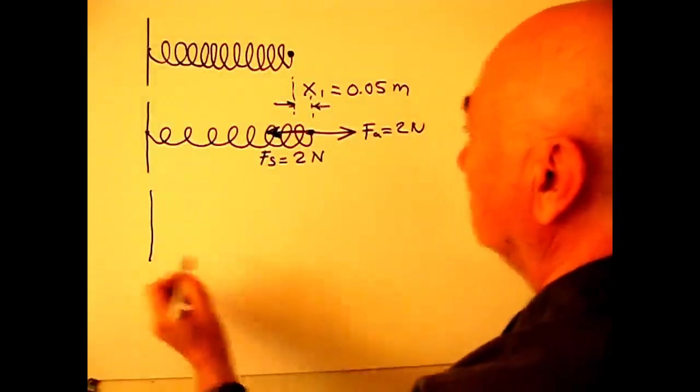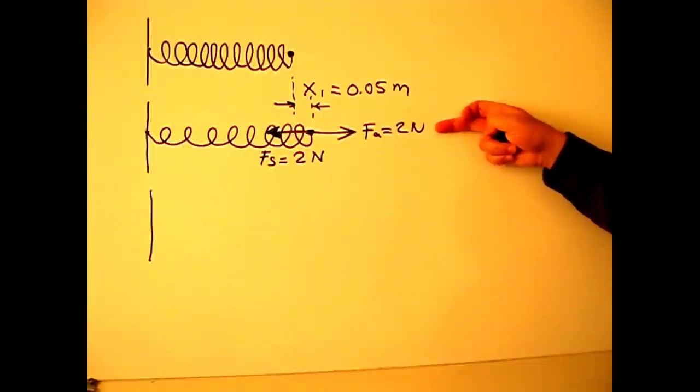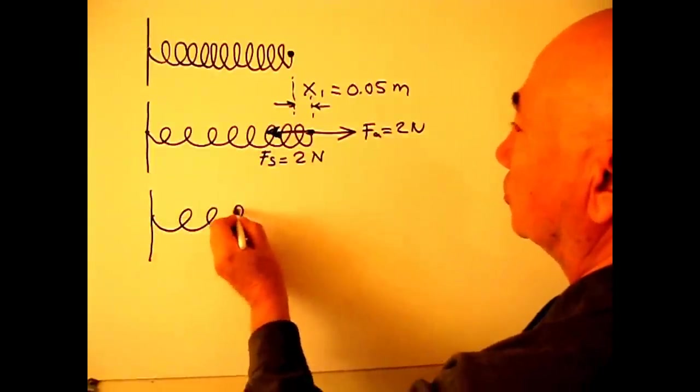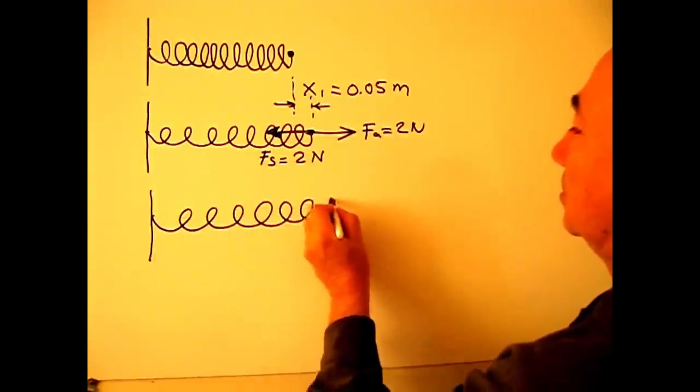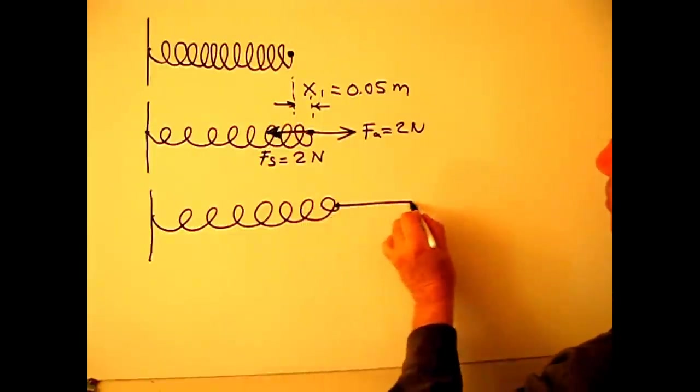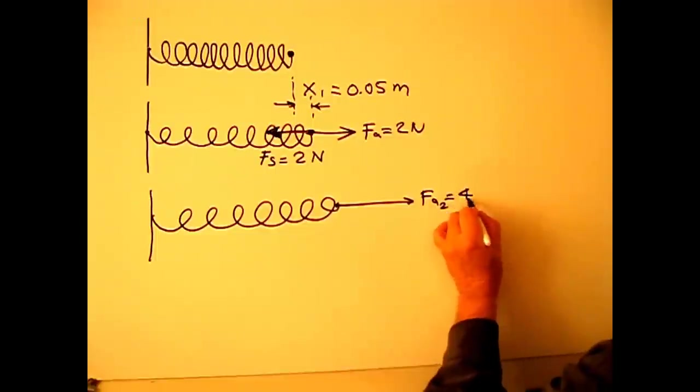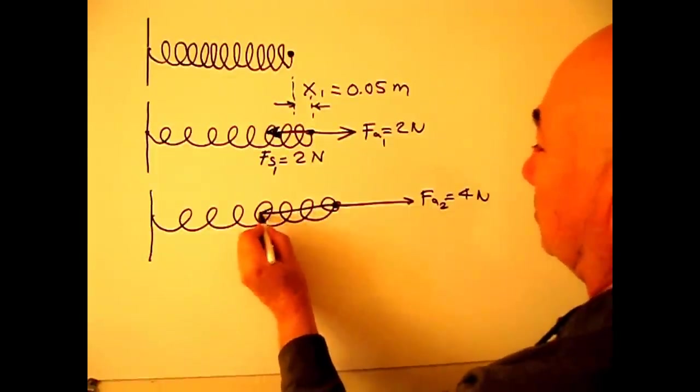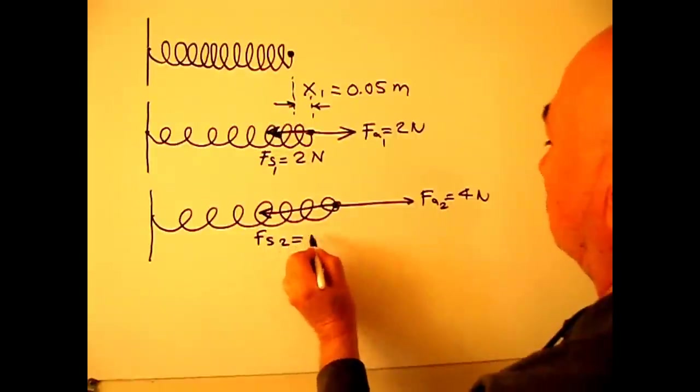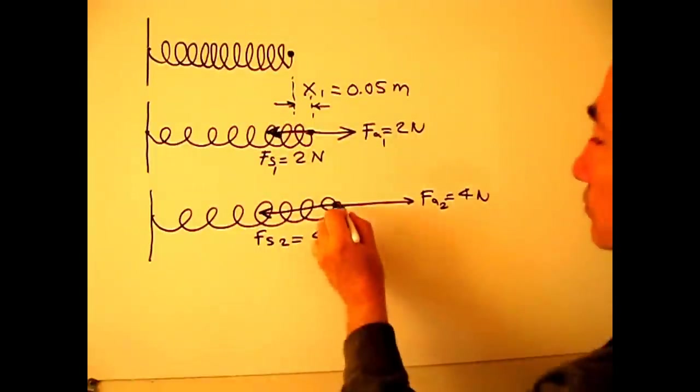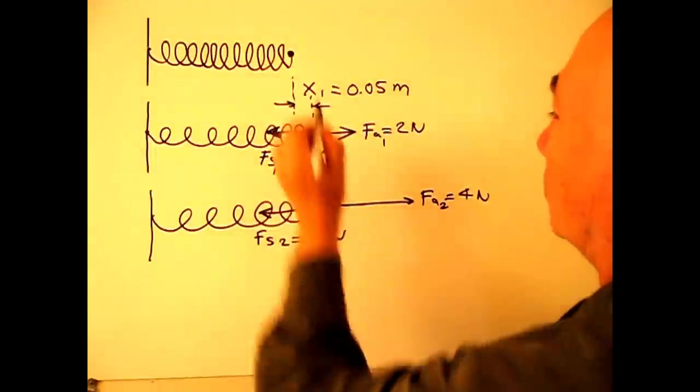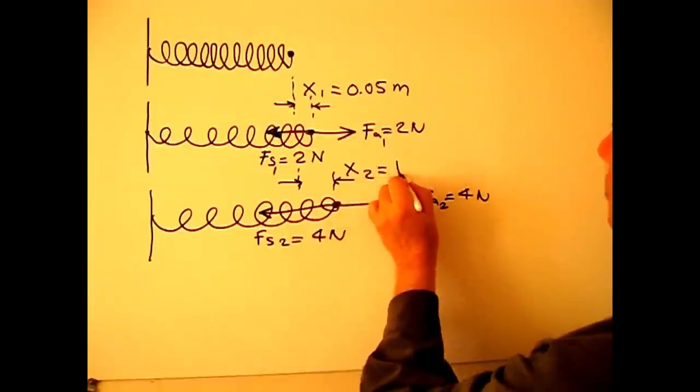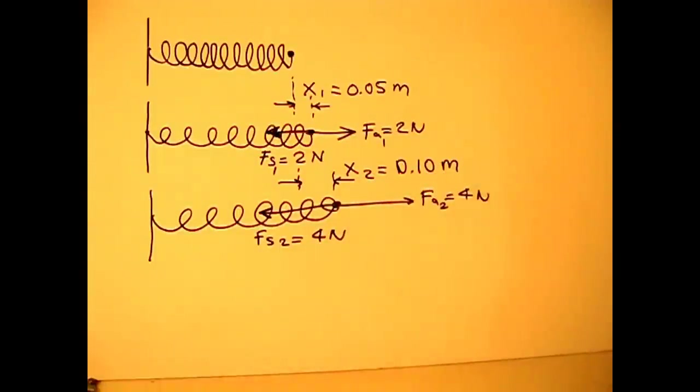Let's say I increase this force to 4 newtons. In this case, the stretch becomes more. The point comes somewhere here. I apply FA2, 4 newtons. The reaction force FS2 will also be 4 newtons. In this case, displacement from the original position will be x2, 10 cm or 0.10 meters.